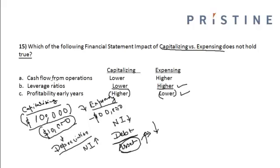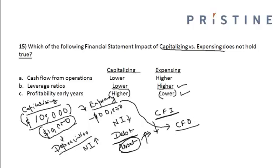Now let us look at the first option: cash flow from operations is lower and expensing is higher. Once the purchase amount is capitalized, it is reported under cash flow from investing activities. Whereas if it is expensed, it is classified under cash flow from operating activities. So cash flow from operations will be higher under capitalization and lower under expensing — making this option incorrect.